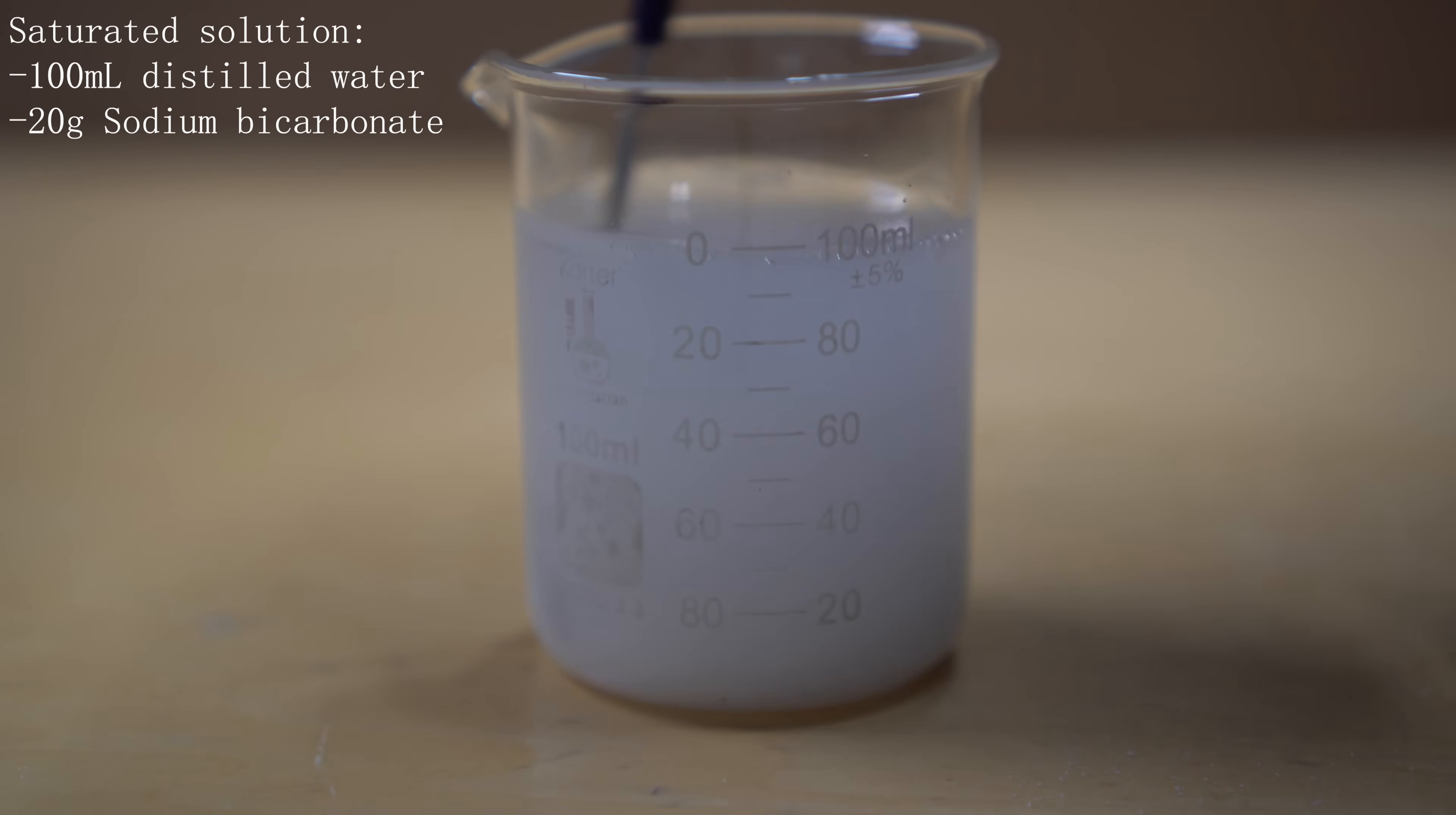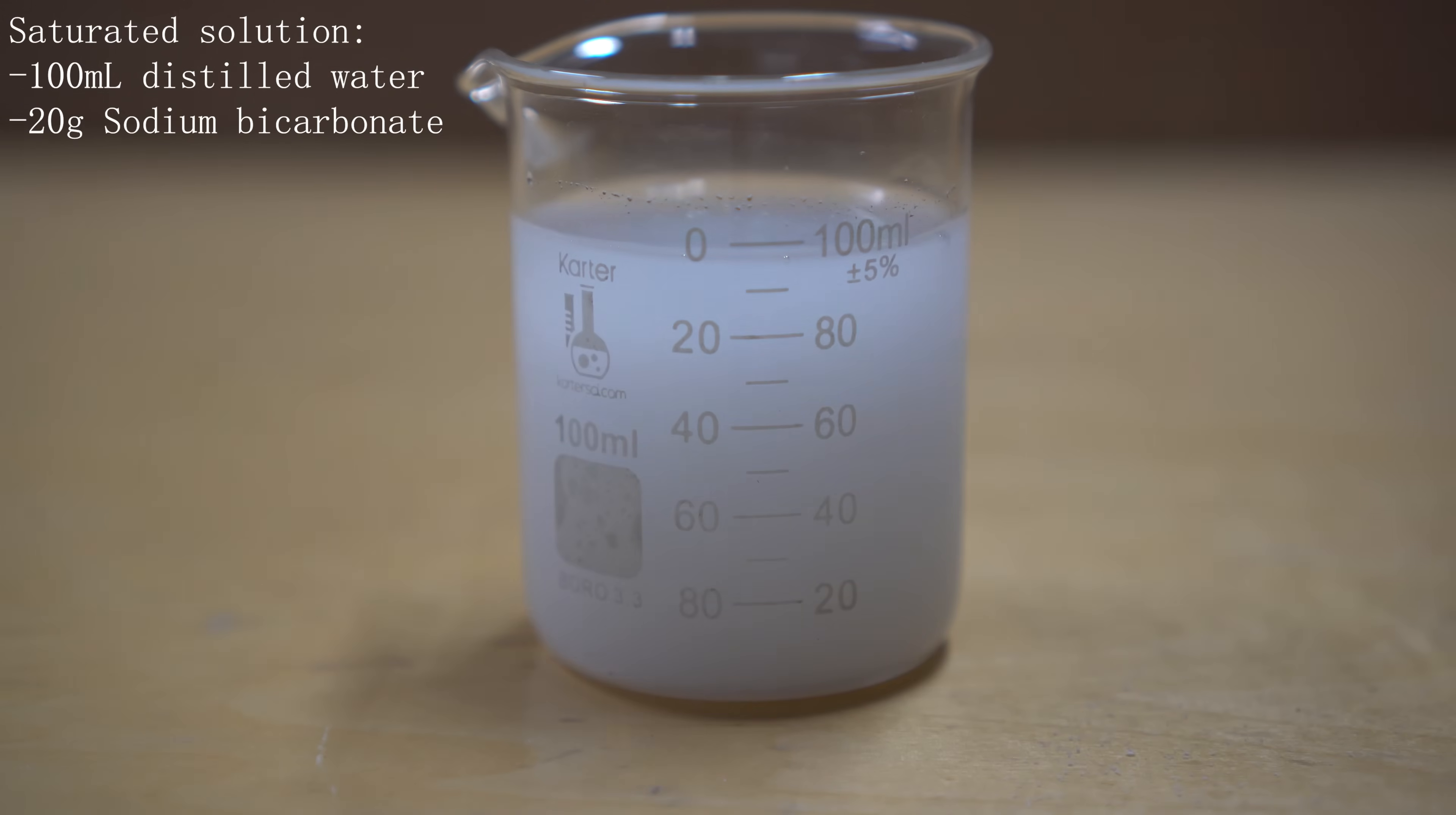So I started by adding 20 grams of sodium bicarbonate to 100 milliliters of distilled water and mixed them together. I then left the solution alone and waited till the leftover sodium bicarbonate fell to the bottom. What I wanted was the relatively clear solution at the top.